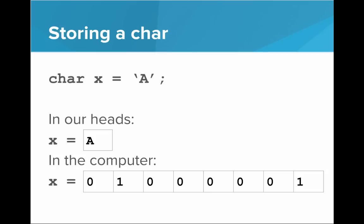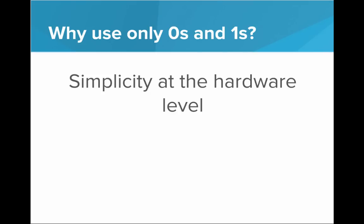But in the computer, at the base of everything, the computer is not actually storing some symbol that looks like an A at the base of the computer. It's actually storing a string of zeros and ones that represent A. Now, why would the computer be doing this? Why is it better to only use zeros and ones? Well, it really boils down to being as simple as possible at the hardware level. We don't want to have too much complexity going on when we're storing and reading data.